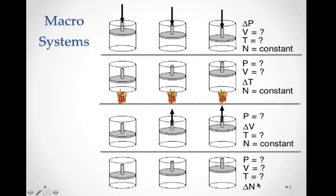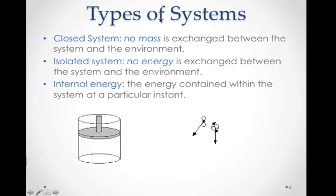And finally, we can change how many molecules there are and see what happens to pressure, volume, and temperature. These are some of the ways and things we'll do with our macro systems to study thermal processes. There's going to be some common language when we talk about systems - not just micro and macro systems, but properties of systems. For example, a closed system: in a closed system, there is no mass exchange between the system and environment. In other words, the number of molecules stays the same inside the cylinder.